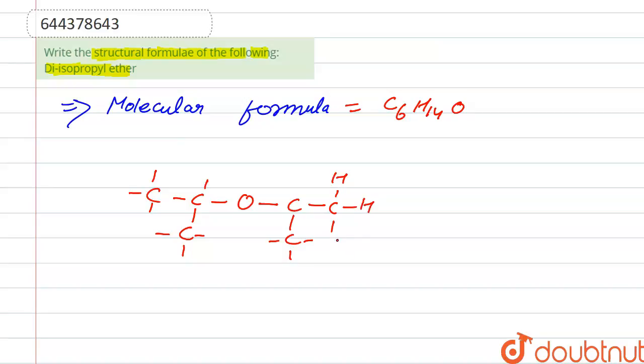One, two, three, four, five, six, seven, eight, nine, ten, eleven, twelve, thirteen, and fourteen. So this is the structure formula of di-isopropyl ether.